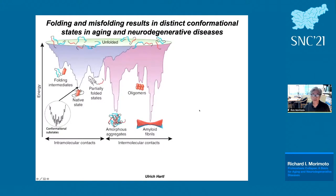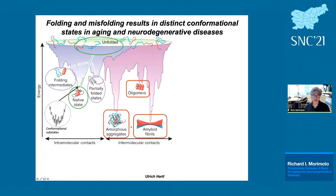What I'm showing here is a landscape diagram where every polypeptide enters at the highest energy state — the extended polypeptide. Every protein can form intramolecular contacts that lead to native states, and these native states can also be populated by folding intermediates and partially folded states. Every protein can also transition into intermolecular contacts; if the hydrophobic regions associate, you get ordered oligomers that become amyloid fibrils and amorphous aggregates.